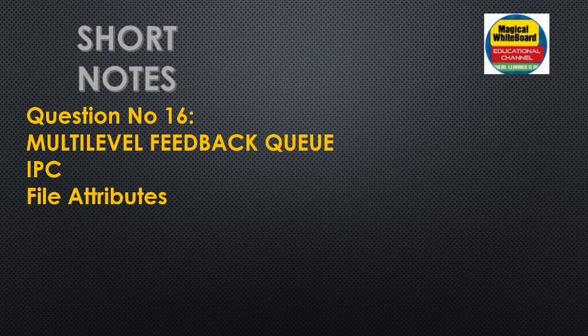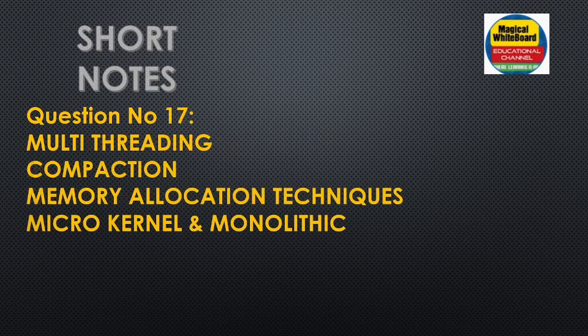IPC — Interprocess Communication. File management: file name, types, file location, file size, file attributes — discuss file management. Question number seventeen: multithreading concept. Compaction — what is compaction and when is compaction done in memory. Memory allocation techniques and fitting algorithms.